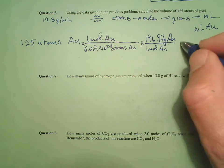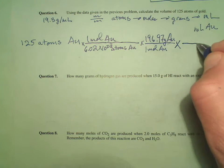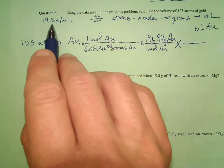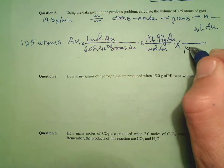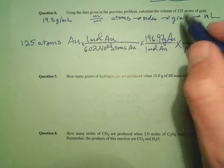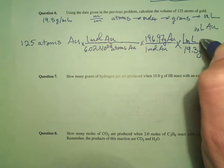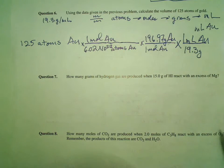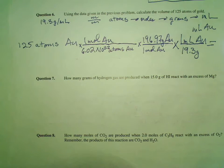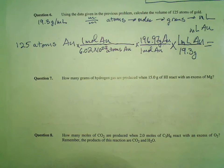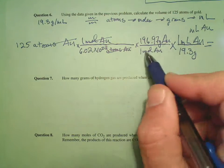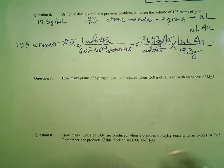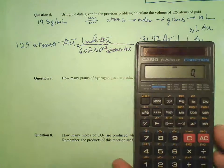So I've gotten into grams. Now it's just a matter of using my density, because I'm heading to milliliters: 19.3 grams of gold per one milliliter of gold. Let me check my units: atoms of gold cancel, moles of gold cancel, grams of gold cancel — leaving milliliters. It's just a matter of plugging and chugging.